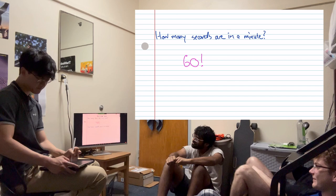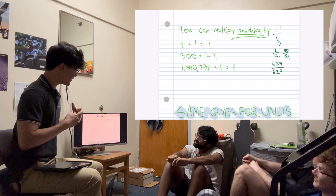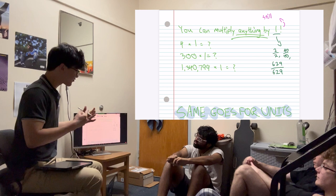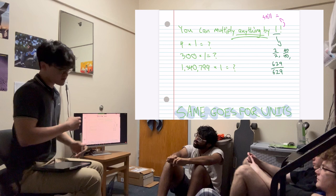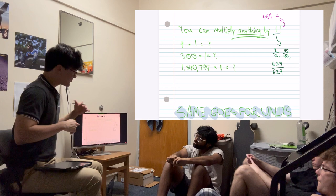So our first lesson is you can multiply anything by one, and it'll still equal one. So when I say anything by one, we all learned in elementary school, right, that in a fraction, if the number on top is the same as the number on bottom, it equals one. So some examples are 2 over 2, 400 over 400, 629 over 629. So knowing this, 4 times 1 should equal 4, because it's the same exact number and it doesn't remain changed.